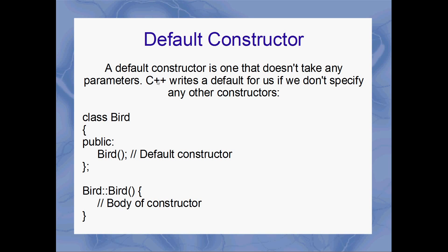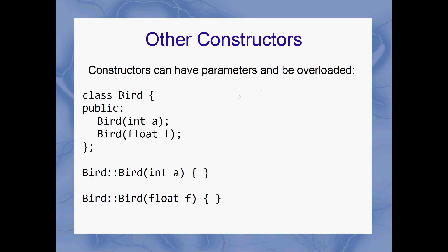That empty body is exactly the default constructor that C++ writes for you automatically. If you don't specify any constructors yourself for a class, C++ will kindly write one for you — the default constructor that does nothing. The moment that you specify another constructor, whether it be the default constructor or another constructor that takes parameters, C++ won't write a default constructor for you. Constructors can actually take parameters and they can be overloaded, like any other function.